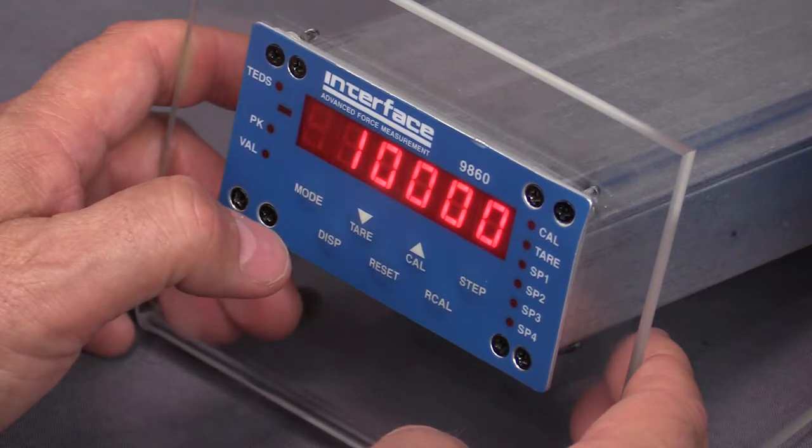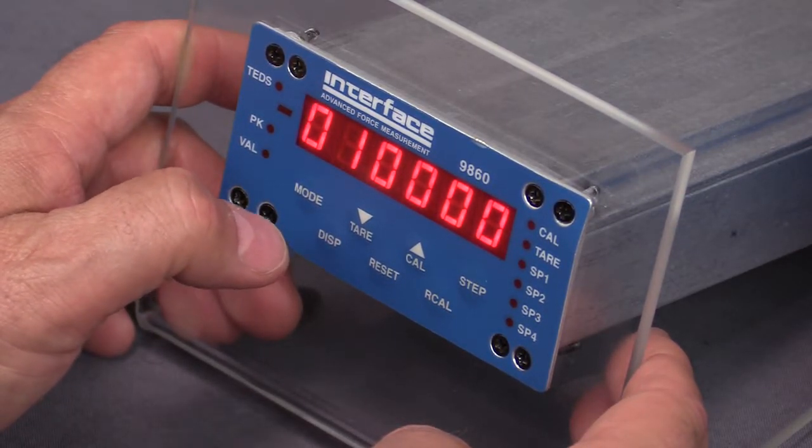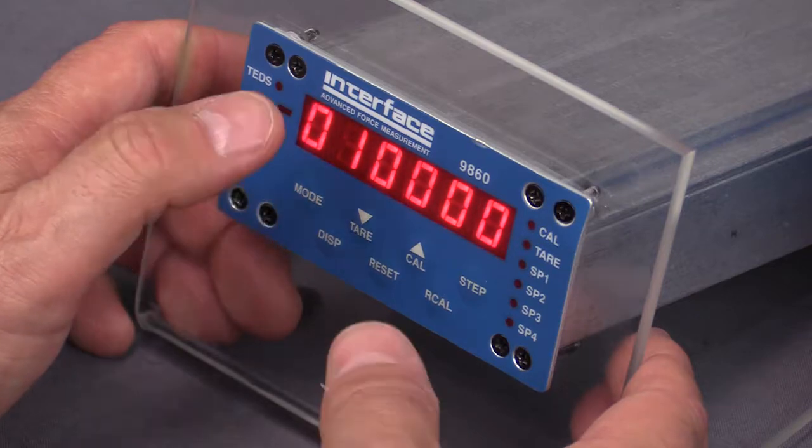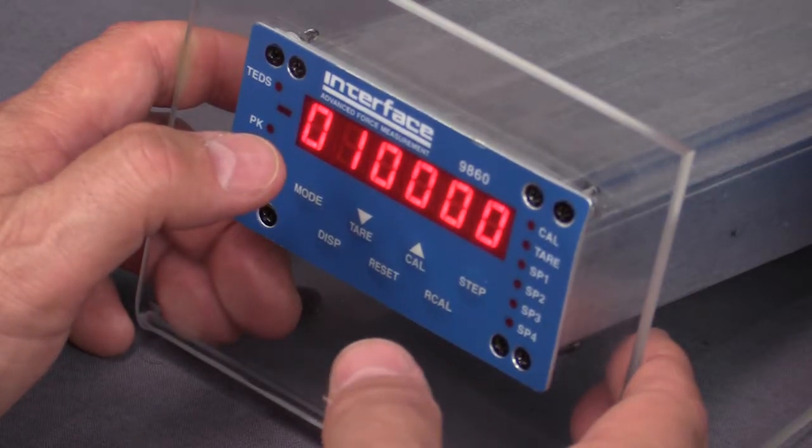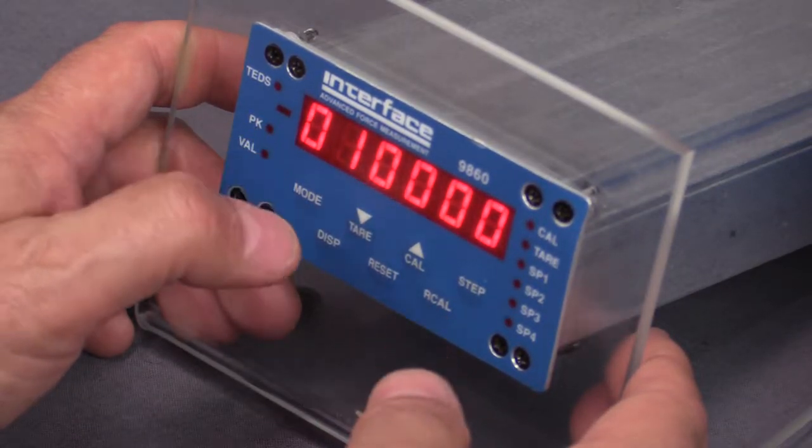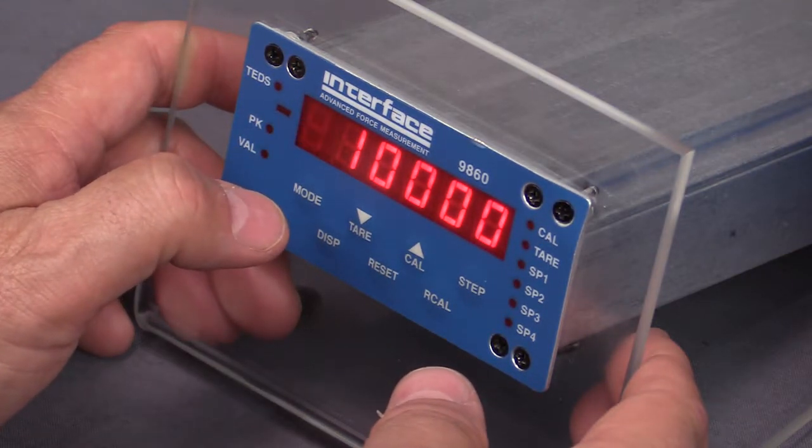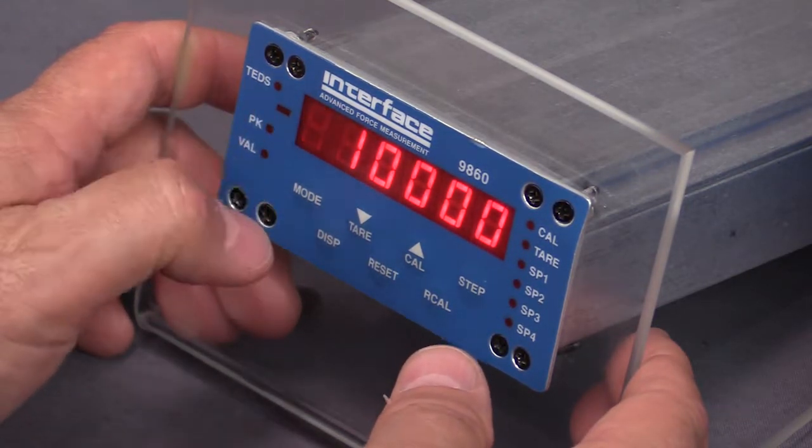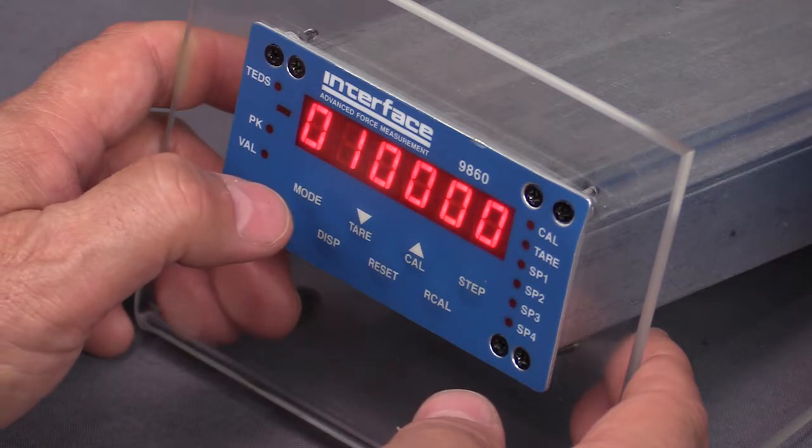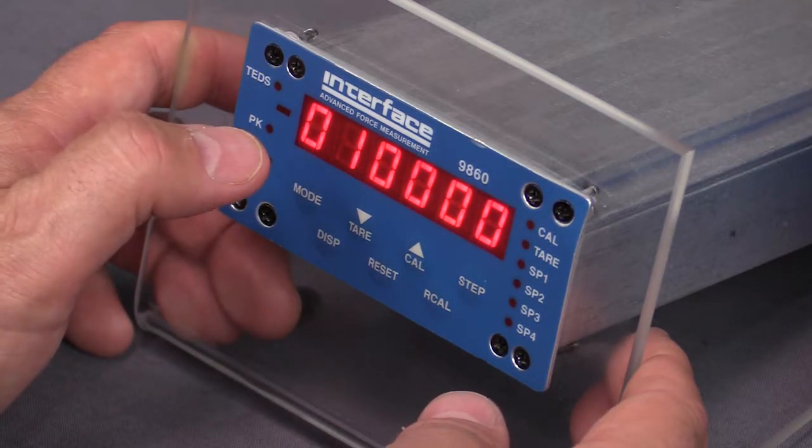FS means full scale. This is where we're going to set the full scale for the analog output. In this case we're going to match it to the full scale of the system, so 10,000 is what we set for the calibration value. For the full scale on this we will set it to 10,000 as well, so that means at 10,000 you'll get a 10 volt output on your analog output.